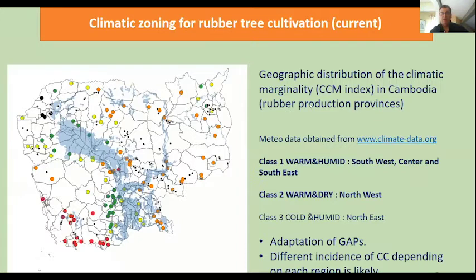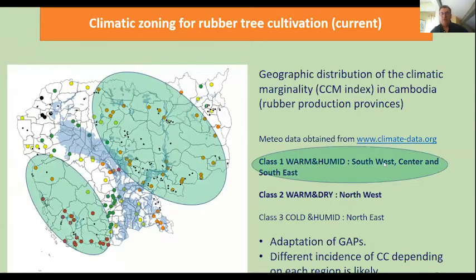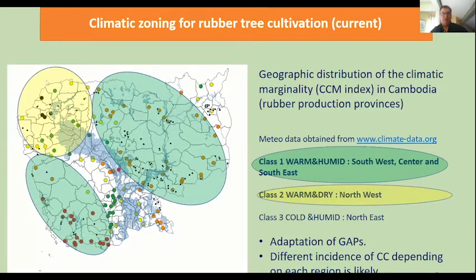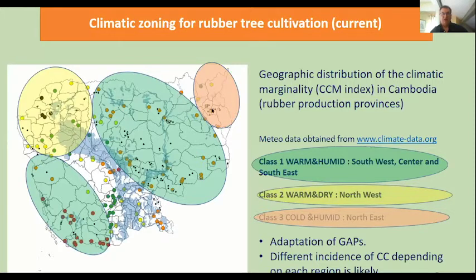Applying this composite climatic marginality index in Cambodia, you see class one — warm and humid — in the southwest with almost no climatic marginality. The center and southeast are slightly more marginal due to a longer dry season. The northwest is warm and dry. The latest developments in the northeast — provinces of Ratanakiri and Mondolkiri — are cold and humid. For this climate, we need adaptation of good agricultural practices, and each region will have different incidence of climate change. IPCC scenarios plan a temperature increase from 2 to 3.5 degrees, pushing maximum temperatures from 28 degrees now to 30–31 degrees.